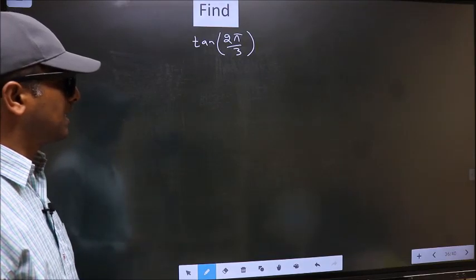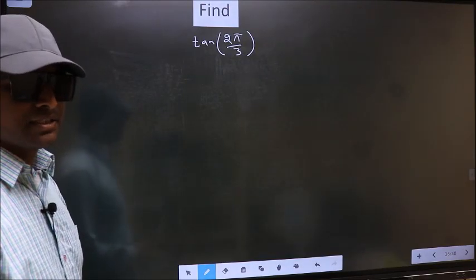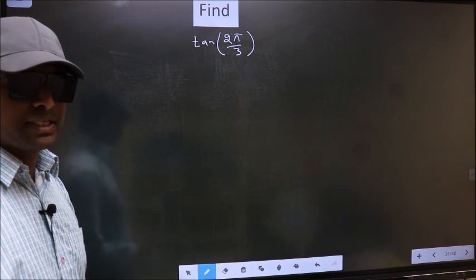Find tan 2π/3. To find this, we should follow this method C.